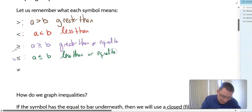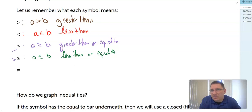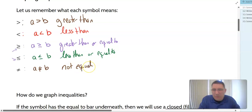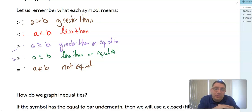Finally, the last symbol — one you might have seen before — is an equal sign with a cross through it. If we cross through something, it means that it's not that. So this symbol literally means that A is not equal to B. It is not equal.